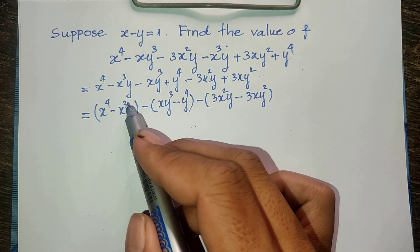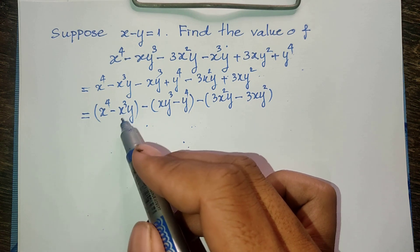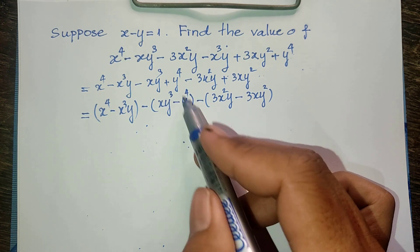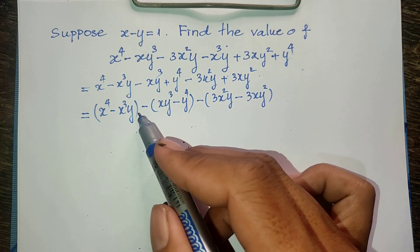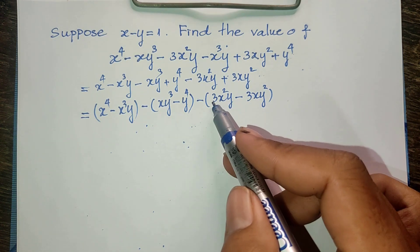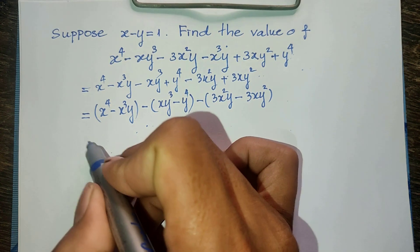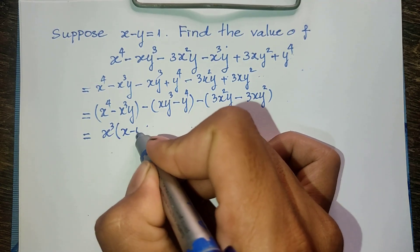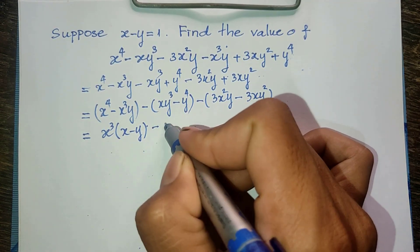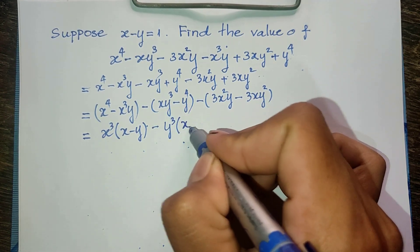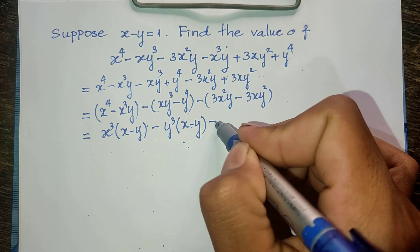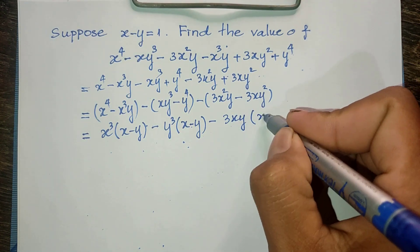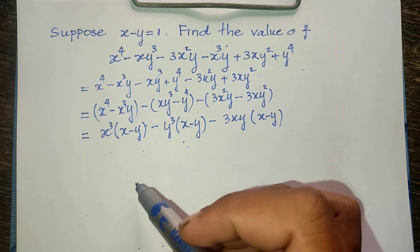Now this group has x power 4 and x power 3, so I factor out x power 3. This group has minus y power 4 and minus y power 3, so I factor out y power 3. And this group I take 3xy out as a factor. Each group gives a factor of x minus y.